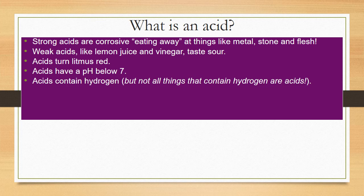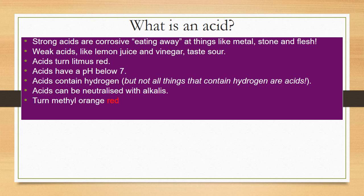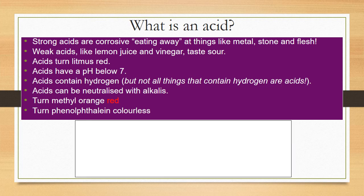Acids can be neutralized by alkalis — they can essentially cancel each other out. You can turn methyl orange red with an acid, and you can turn phenolphthalein colorless. We'll be using these indicators later in class. Here's an example: that's methyl orange and it's gone red.